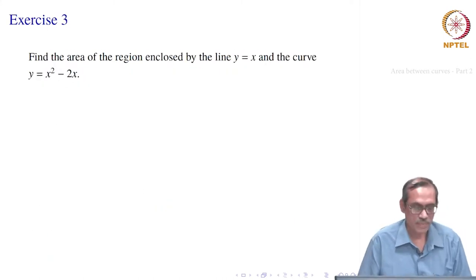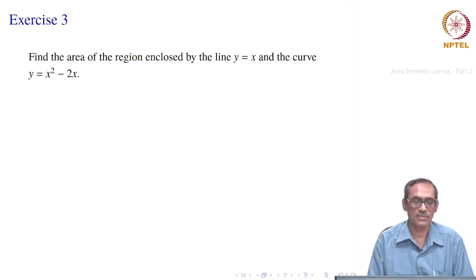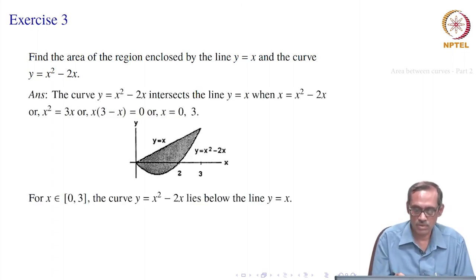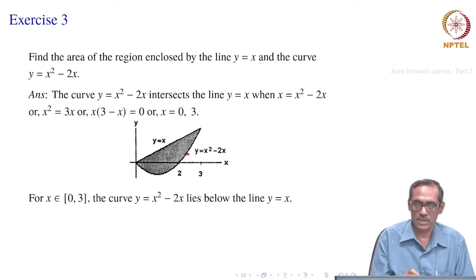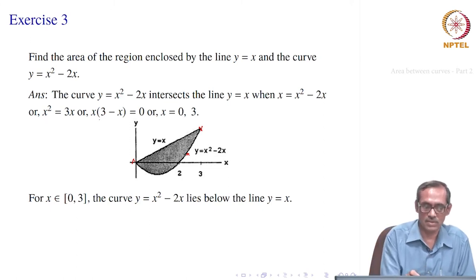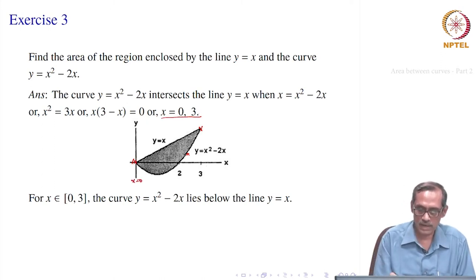Let us take the next problem: find the area of the region enclosed by the line y equal to x and the curve y equal to x squared minus 2x. Since it is enclosed by these two, y equal to x should intersect the parabola at least at two points. Setting x squared minus 2x equal to x gives solutions x equal to 0 or x equal to 3.